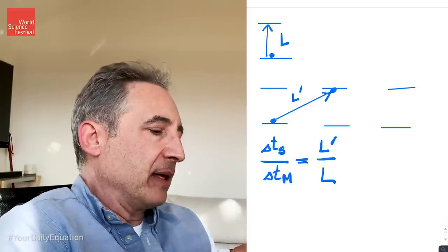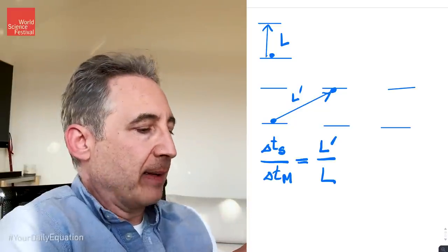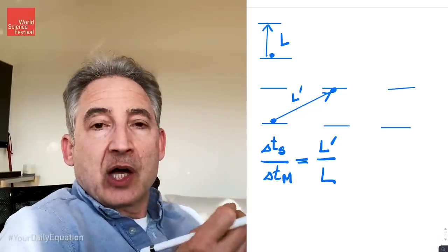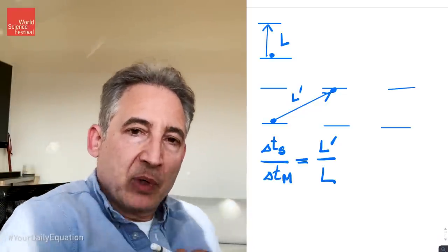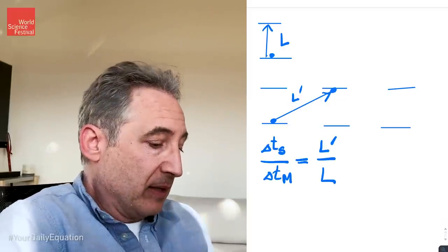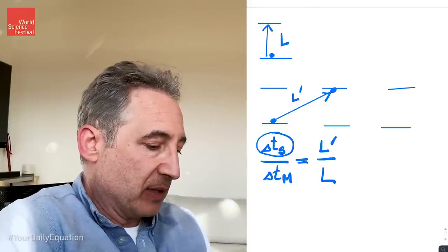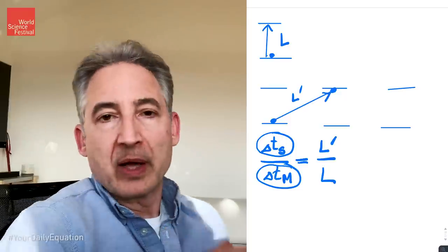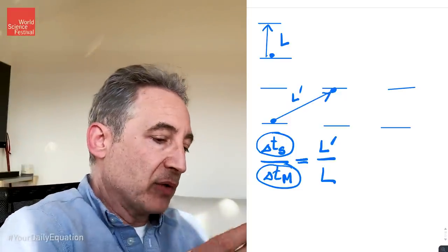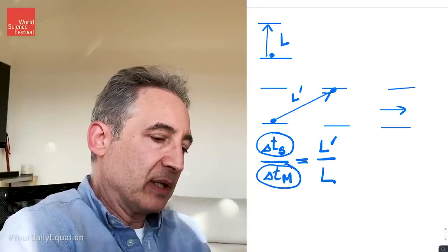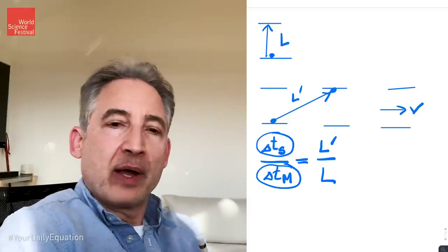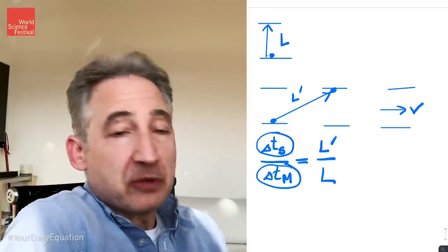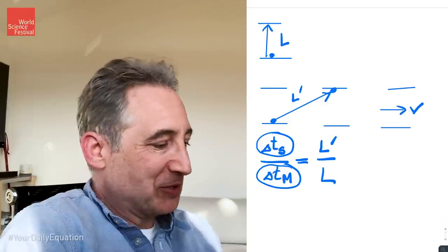Just for argument's sake: if L prime, the diagonal trajectory for the moving clock, were three times larger than the straight up-and-down trajectory on the stationary clock, then the moving clock will tick slower by a factor of three — less time will elapse on it by a factor of three. The ratio of time on the stationary clock compared to time on the moving clock will be three. But what we want to do is imagine that this clock has a given velocity V and work out L prime over L in terms of V itself. It's actually a straightforward calculation that makes use of nothing more profound than the Pythagorean theorem.